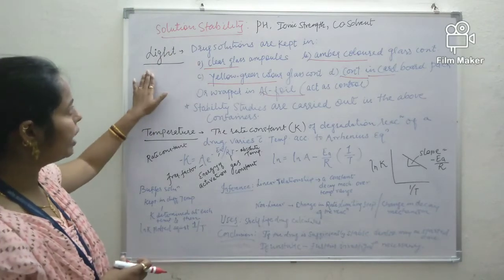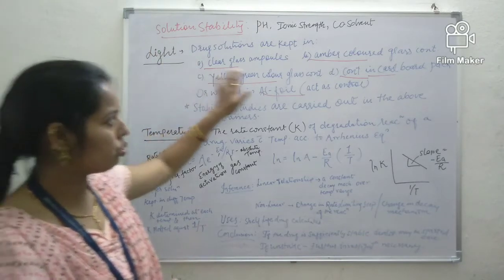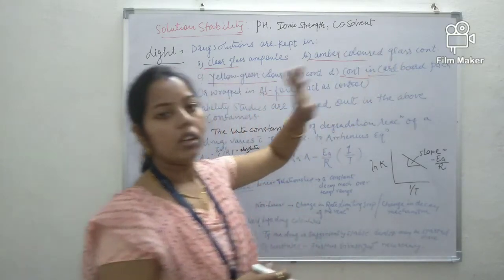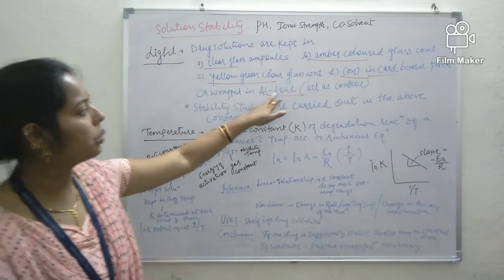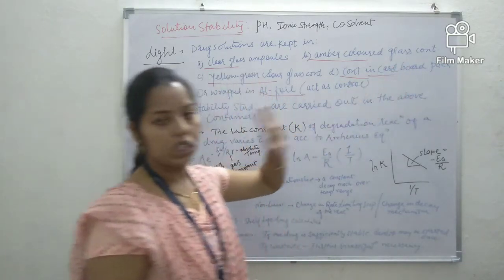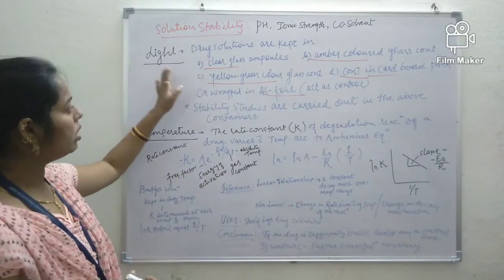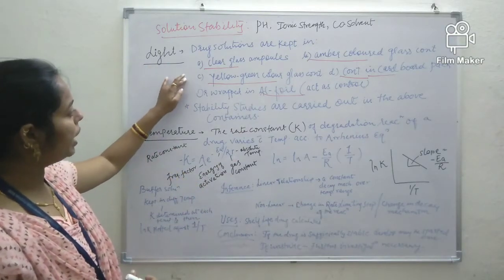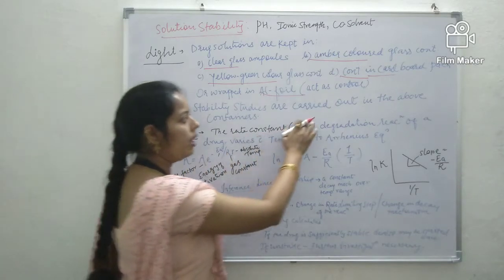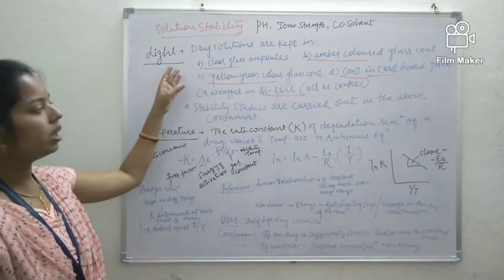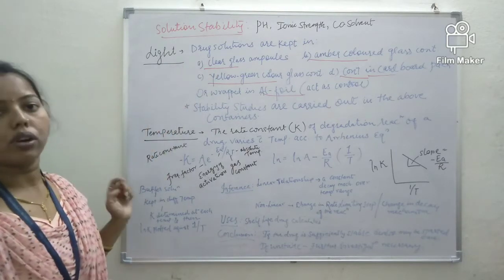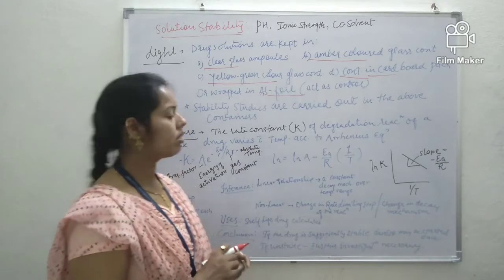If light affects the solution, then we store the solution in an amber colored glass container, or we can wrap the bottle in aluminum foil or cardboard packages. The stability is then carried out in the above containers, and we perform stability analysis for the drug solutions.